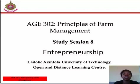Welcome back to study section 8 on AGE 302. In the previous study section, we discussed the meaning of factors of production and their characteristics — features of land, capital, and labor. But this study section will be devoted to entrepreneur.